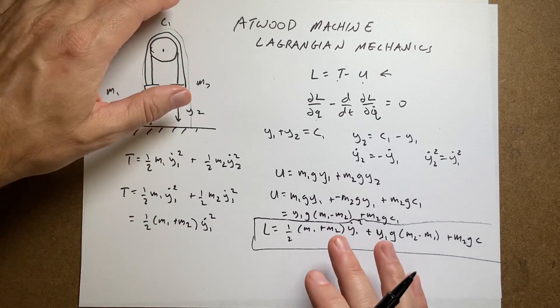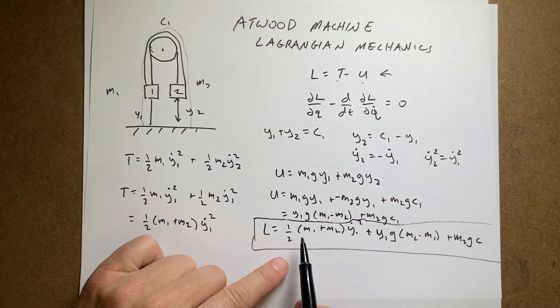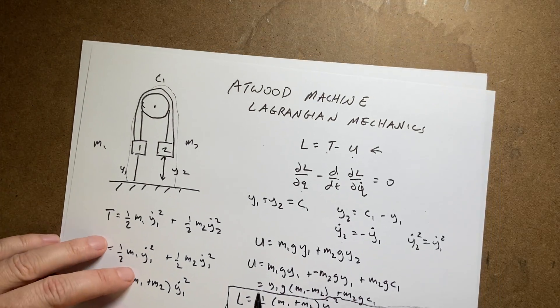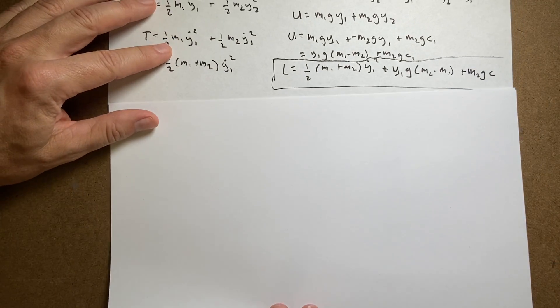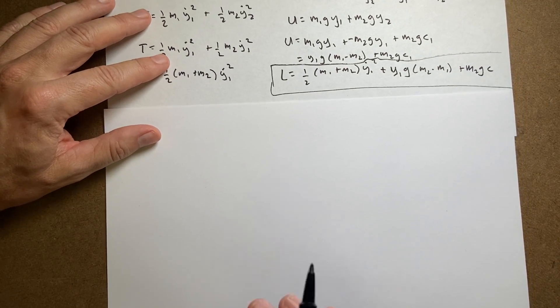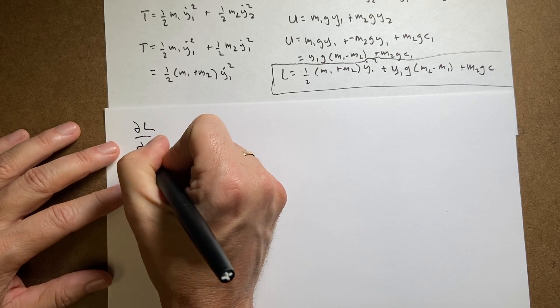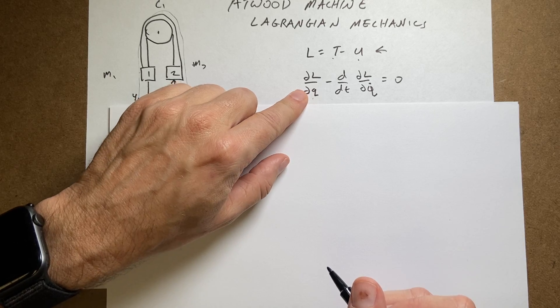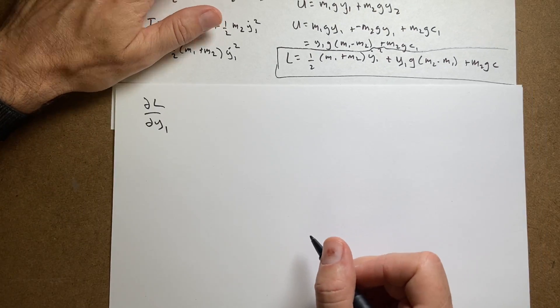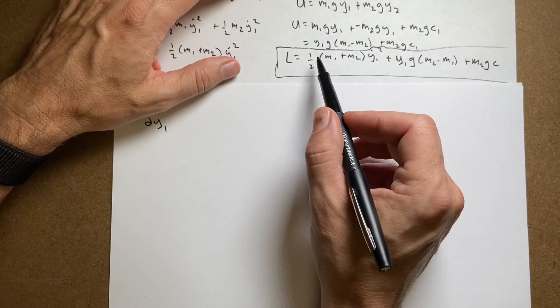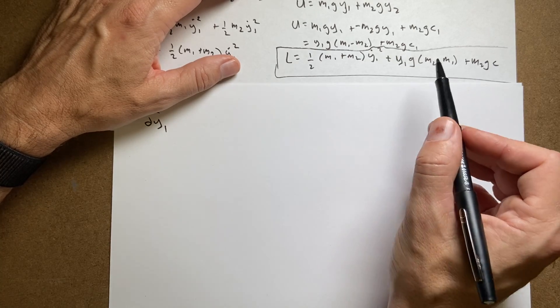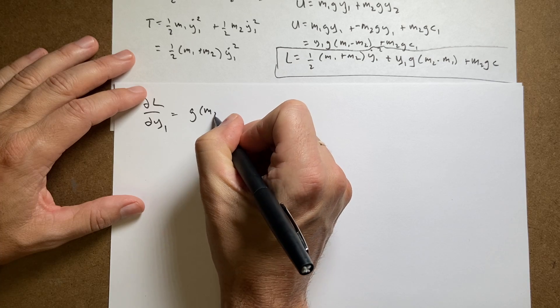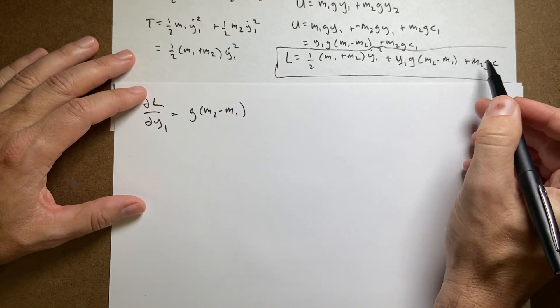I should have left a space. Okay, now let's, we want to take the partial of that. See, we only have one variable now. I've reduced it to a one variable problem even though I start with two. So that's good. So let's take this L, okay? And I want to take the partial of L with respect to y1, right? Because in my Lagrangian, I need to find this term. So the partial of L with respect to y1. This doesn't have a y1 term in it. It has y1 dot. This one does. So I get g m2 minus m1 and then that term 0. That's it.